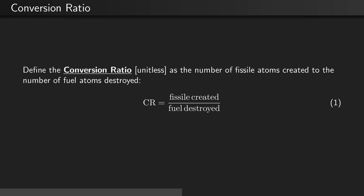Let's define the conversion ratio as the unitless number of fissile atoms created divided by the number of fuel atoms destroyed. Or CR equals fissile created divided by fuel destroyed.